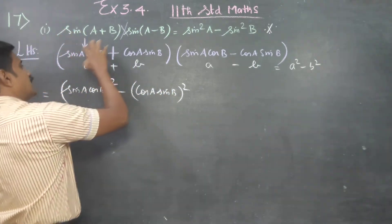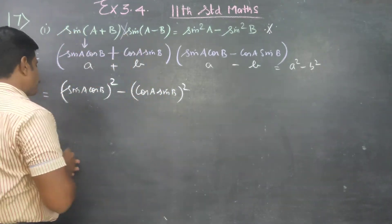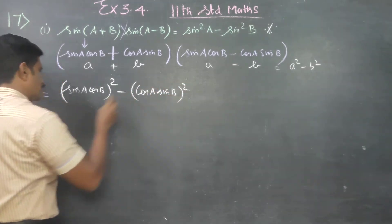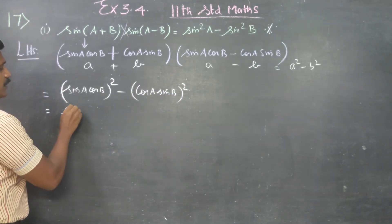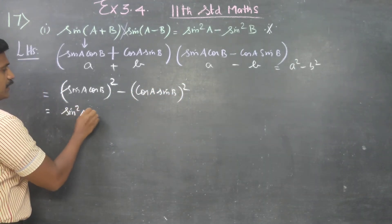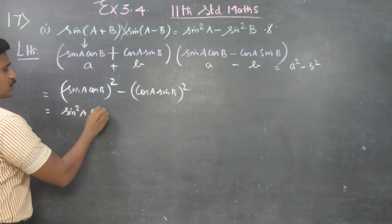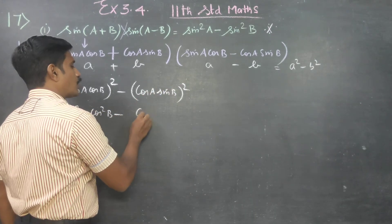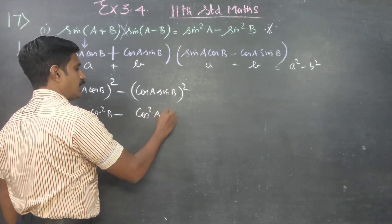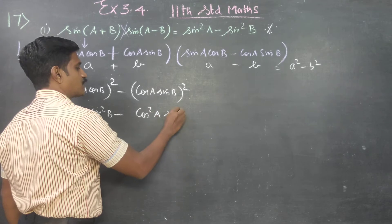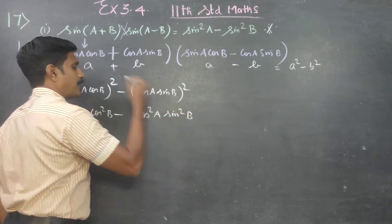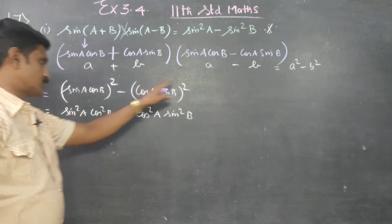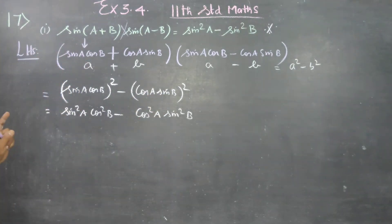Expanding: the first part is sin²A cos²B, and the second part is cos²A sin²B. So we have sin²A cos²B minus cos²A sin²B.